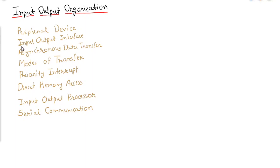We will start with the peripheral device, then we will discuss the input output interface, then asynchronous data transfer, then mode of transfer, then priority interrupt, then direct memory access, then input output processor, and then serial communication. So let us start with the peripheral devices.